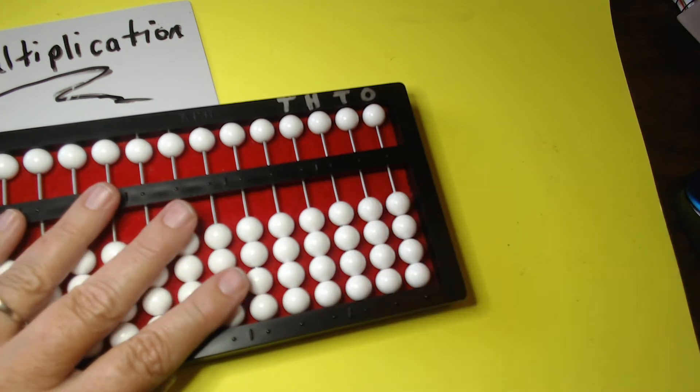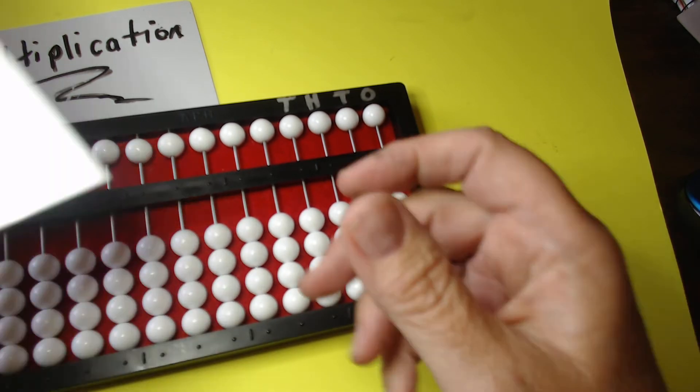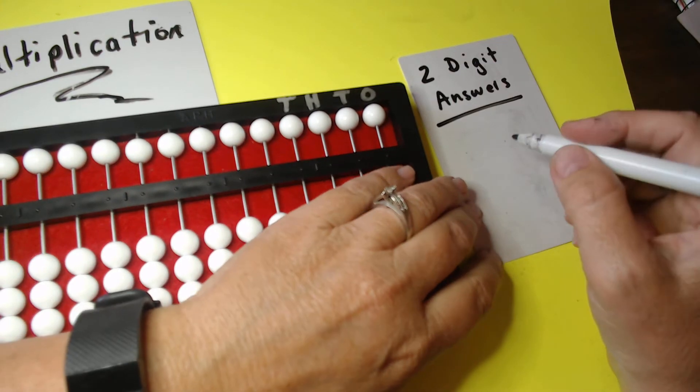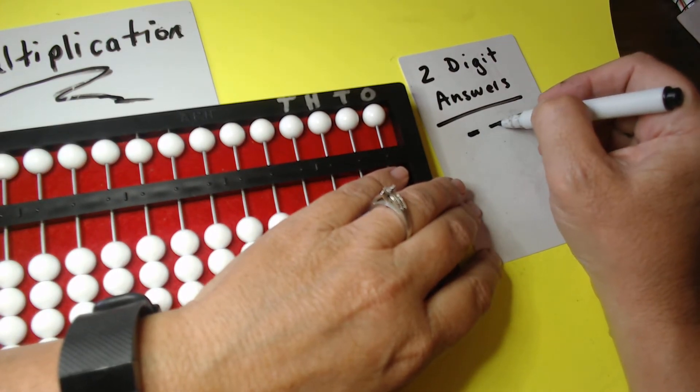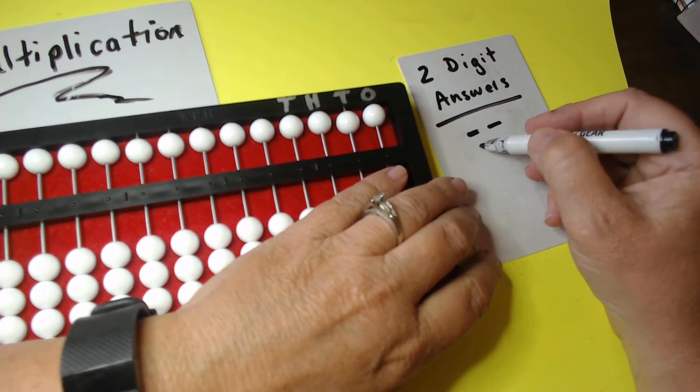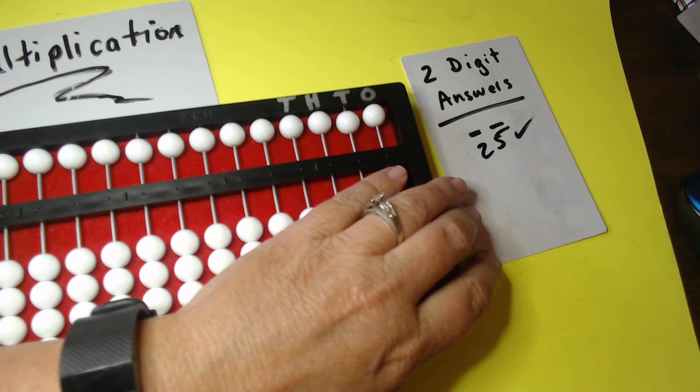A couple things that we need to know before working multiplication problems. We need to know that our answers need to be written as two-digit answers. So what needs to take up two rods or two columns. So if our answer is 25 then that's good. We just write 25.